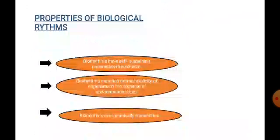Now, what are the properties of biological rhythm? The first property is that biorhythms have a self-sustaining pacemaker mechanism. A pacemaker is a part or organ of the body which controls rhythmic physiological activities. This pacemaker regulates and controls all physiological and behavioral processes with respect to time.